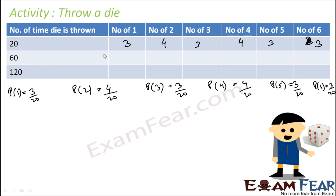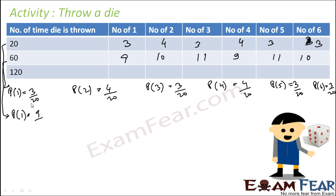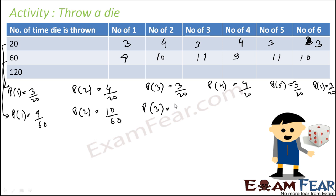Let us perform the same experiment 60 times. You may get something like: probability of getting 1 is 9 by 60; probability of getting 2 is 10 by 60; probability of getting 3 is some number by 60; probability of getting 4 is some number by 60; probability of getting 5 is some number by 60. These are the results I got when I did the experiment.